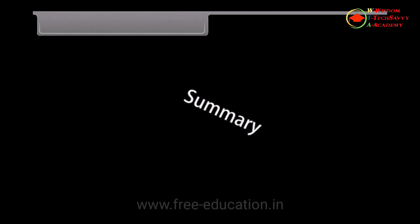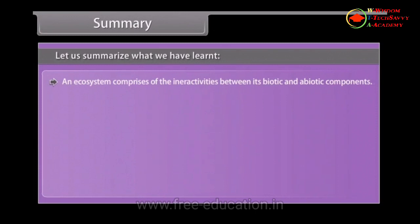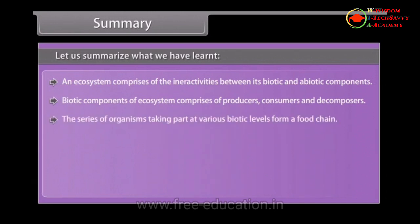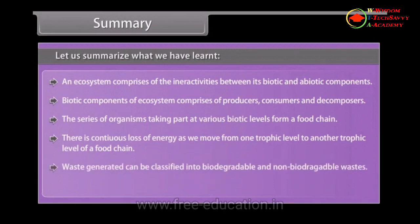Summary: An ecosystem comprises the interactions between its biotic and abiotic components. Biotic components consist of producers, consumers and decomposers. The series of organisms at various biotic levels forms a food chain, with continuous loss of energy as we move from one trophic level to the next. Waste can be classified into biodegradable and non-biodegradable. The use of chemicals like CFCs is causing ozone depletion.